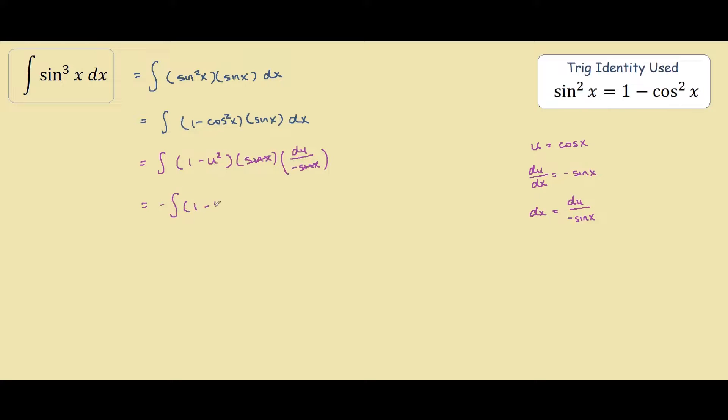So we are left with 1 minus u squared du. And now our integral is quite simple. It's just the integral of 1 is u, and the integral of negative u squared is negative u cubed divided by 3 plus c.